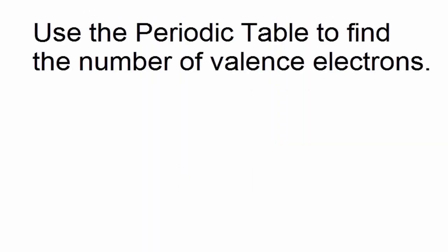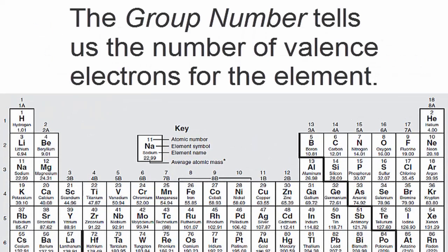We can find the number of valence electrons using the periodic table. The group number tells us the number of valence electrons for the element.